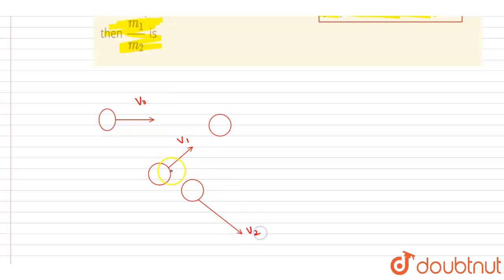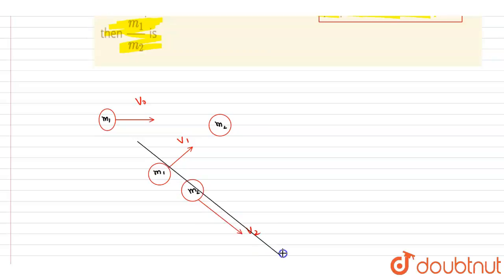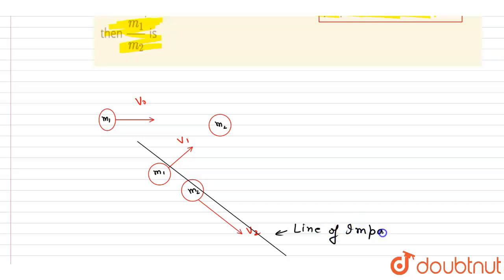Before the collision it was having some velocity v0, and after the collision these are the velocities. This is m1 and this is m2 before the collision, and this is m1 and this is m2 after the collision. So m2 could only move along the line of impact, because before the collision it was not having any velocity, and it will experience only the force along the line of impact — that is N·Δt.